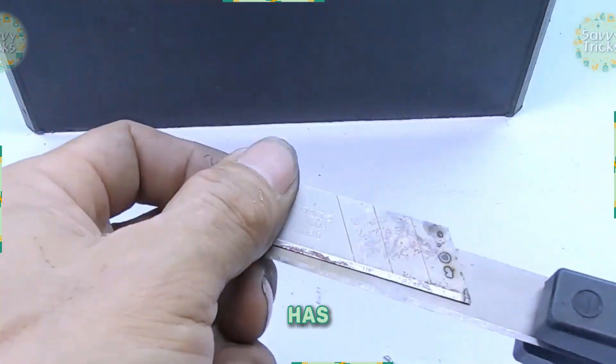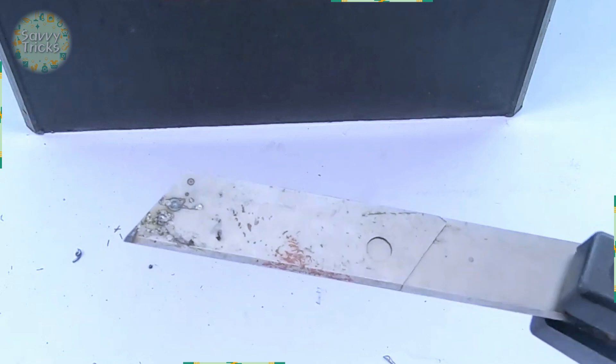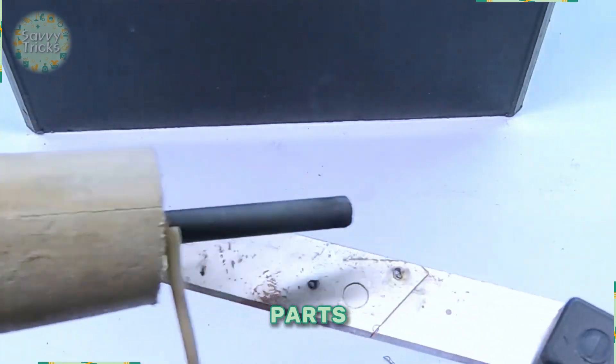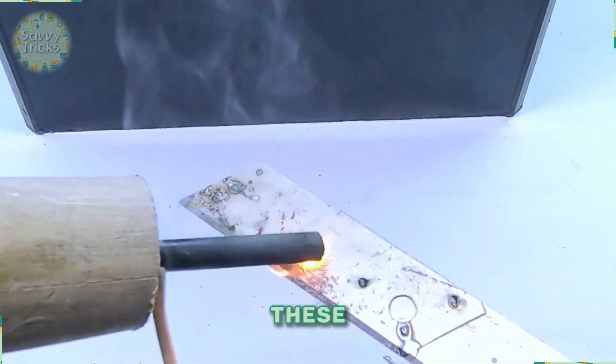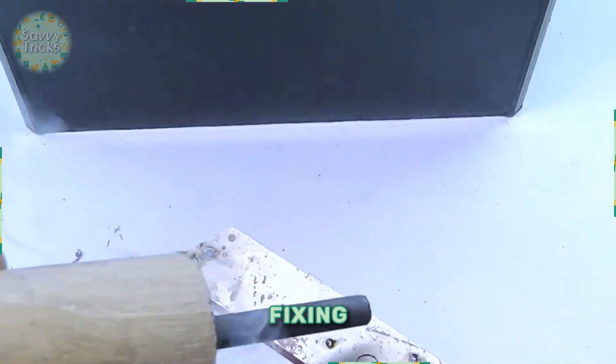If your cutter blade has broken, you don't need to buy a new one. Weld the broken parts together. You can find these blades in the market for two dollars, but you can save your money by welding and fixing the broken parts.